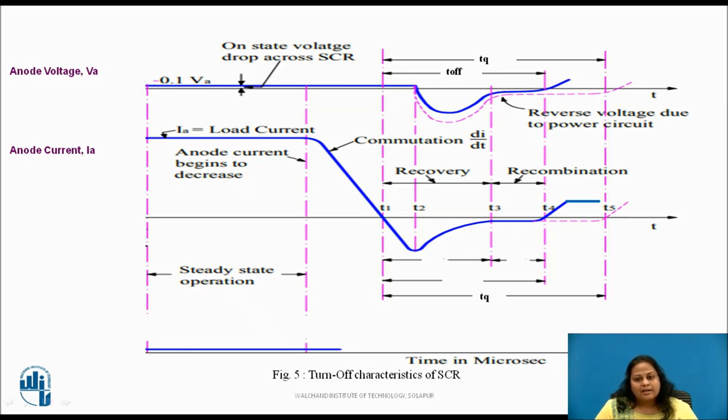Process of turning off is called as commutation. Various methods are used for turning off SCR. Once the SCR starts conducting sufficient forward current, gate has no control on it and the device can be brought back to the blocking state only by reducing the forward current to a level below that of the holding current. But if a forward voltage is applied immediately after reducing the anode current to zero, it again starts conducting without even providing the gate pulse. It is therefore necessary to keep the device reverse biased for a finite period before a forward anode voltage can be reapplied. Thus, the turn-off time is defined as the minimum time interval between the instant at which the anode current becomes zero and the instant at which the device is capable of blocking the forward voltage.